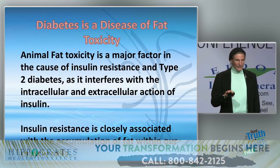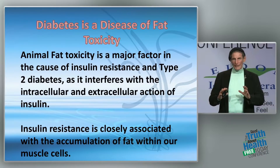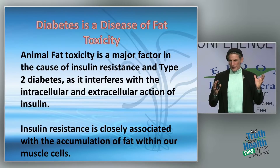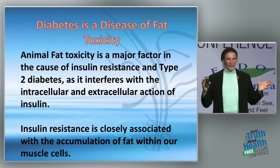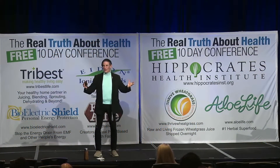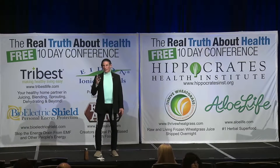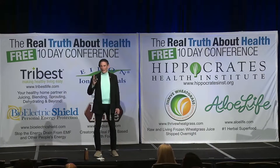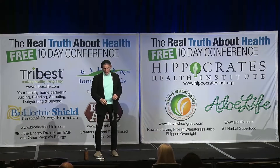I want to address animal fat toxicity, because it's newer information. Not many people have heard about animal fat toxicity to the beta cells of the pancreas — it's a major player. This is one of the key reasons we're seeing 35 to 50 percent more type 2 diabetes in people eating meat.